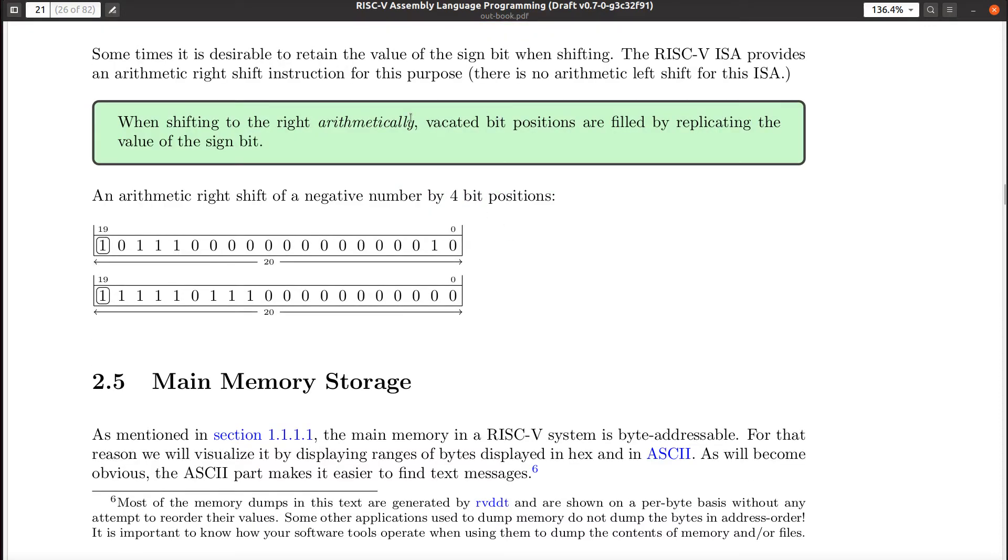All right. So when you're doing it to the right arithmetically, look what happens. You don't just bring in zeros to fill in the vacated positions. You fill it in with one. Well, you don't fill it with ones. You fill it in by replicating the sign bit over here. All right? So let's see what's going on here. If we shift this thing, what? Four bit positions to the right. Well, these four bits will then get thrown away. They disappear over here on the right side.